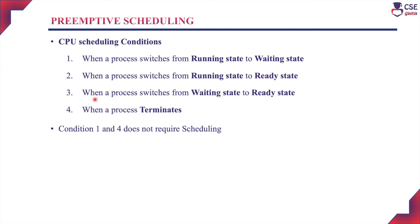The third condition is when a process switches from the waiting state to the ready state. The process waits to be serviced by I/O devices, and once the request is satisfied it enters the ready state — at that point, scheduling is required. The fourth condition is when a process terminates, completing its total execution and leaving the CPU permanently to enter the termination state.